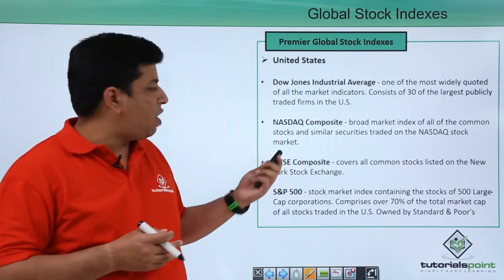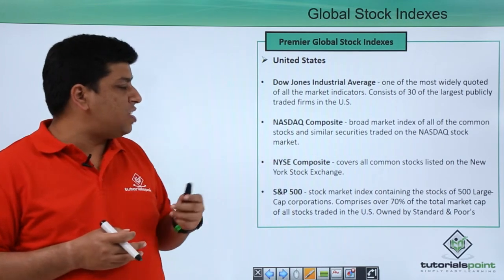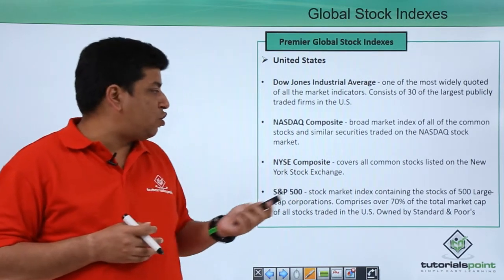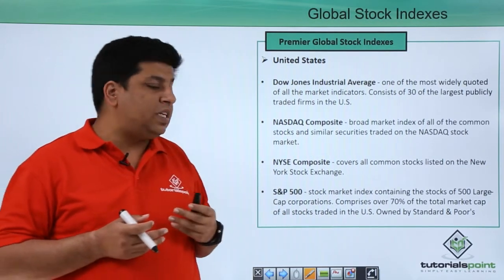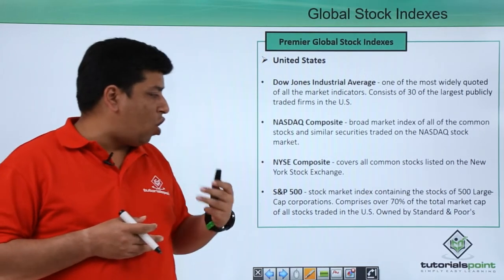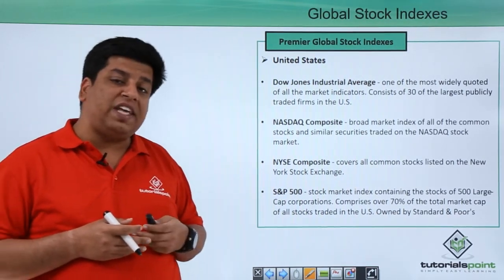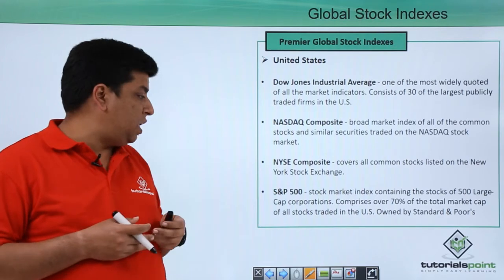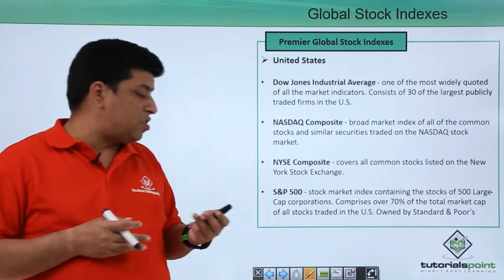In the United States, you have the Dow Jones Industrial Average, which covers 30 of the largest publicly traded firms in the US. Next is the Nasdaq Composite, which covers common and similar securities listed on the Nasdaq Stock Exchange. Then we have the NYSE Composite, which covers all common stocks on the New York Stock Exchange. Next is the S&P 500, which lists 500 global companies and comprises mainly 70% of the total market cap of all stocks traded in the US.